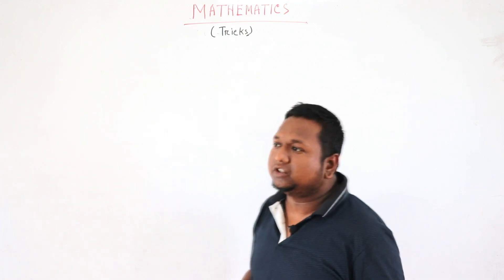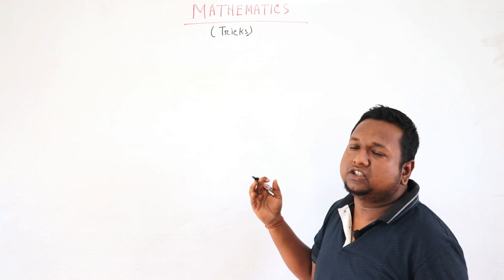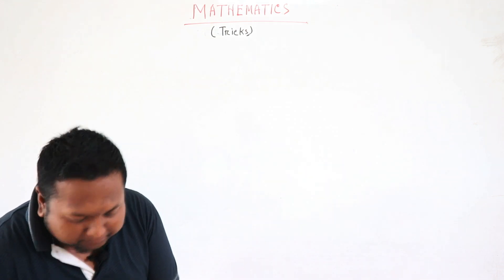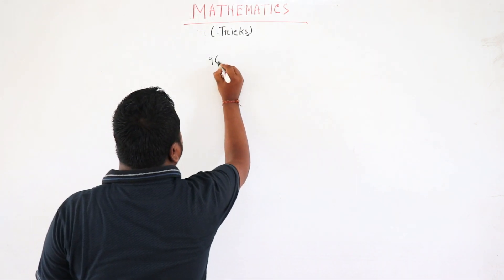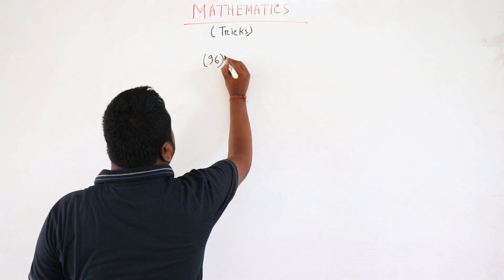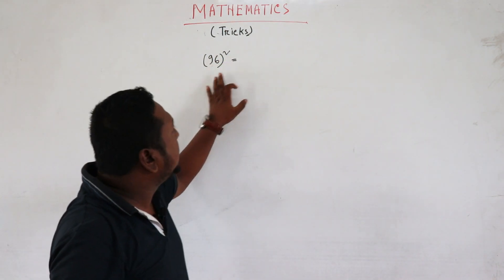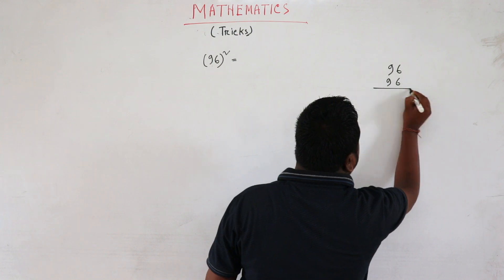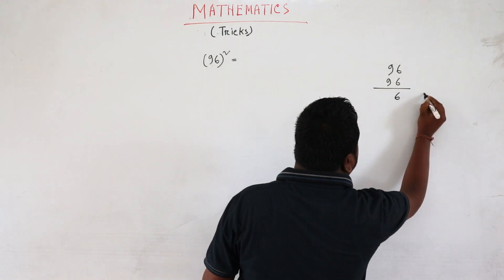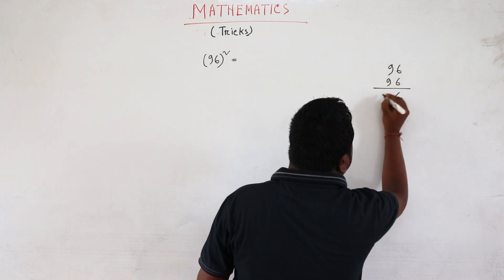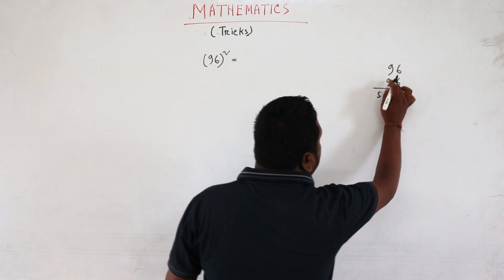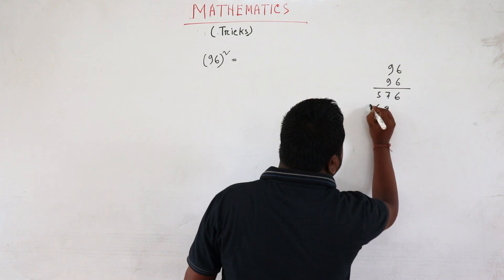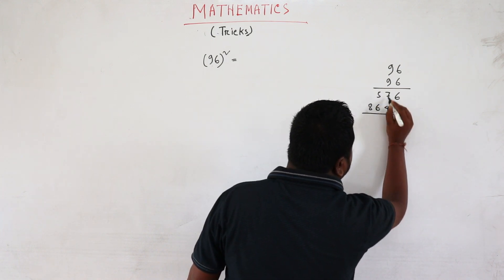Square, two-digit square. 96, 96 whole square, into 96, 36, 57, 85, 86, 61.